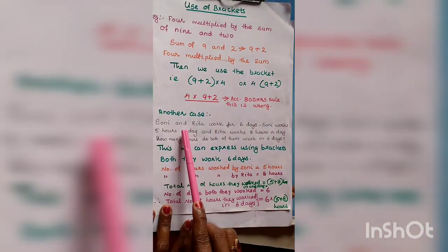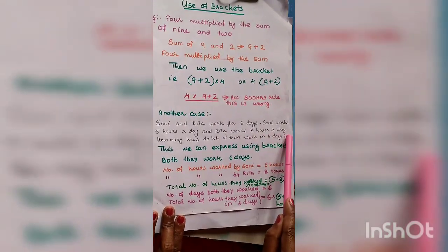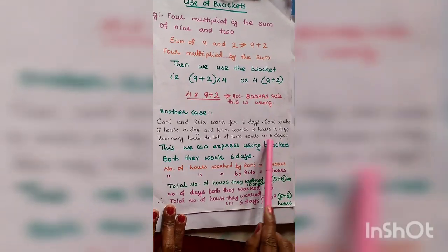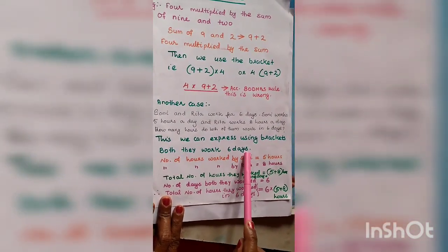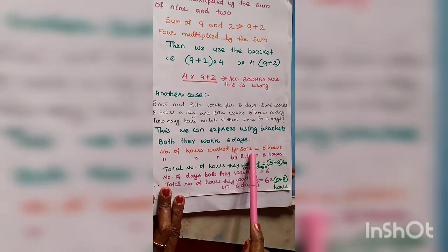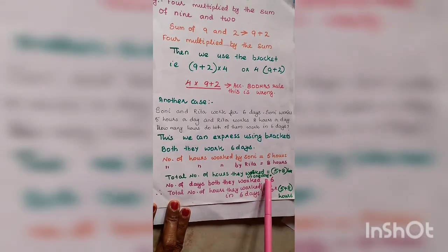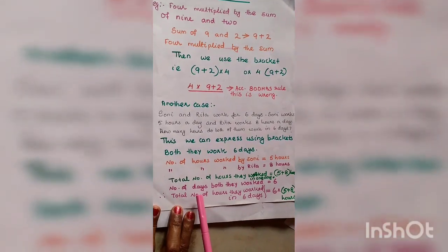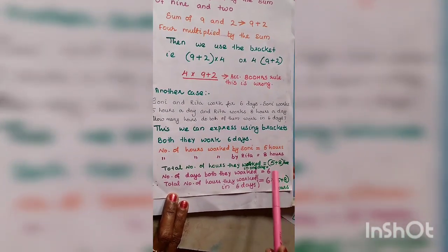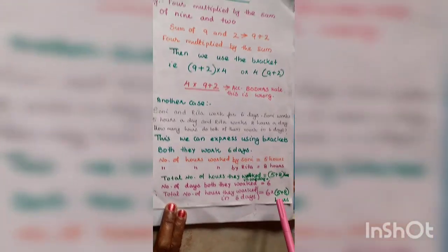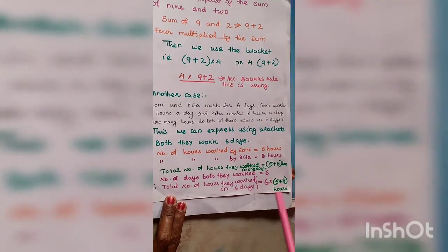Another example: Sony and Rita work for six days. Sony works five hours a day and Rita works eight hours a day. How many hours do both work together in six days? Total hours in one day is five plus eight. Total hours in six days: multiply six by the sum of five and eight. We express this using a bracket: 6 × (5 + 8).